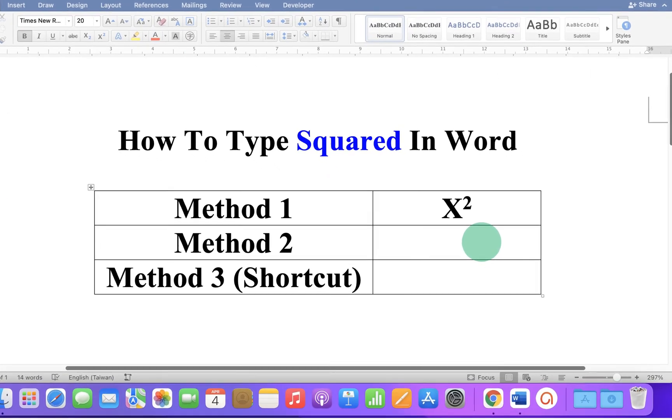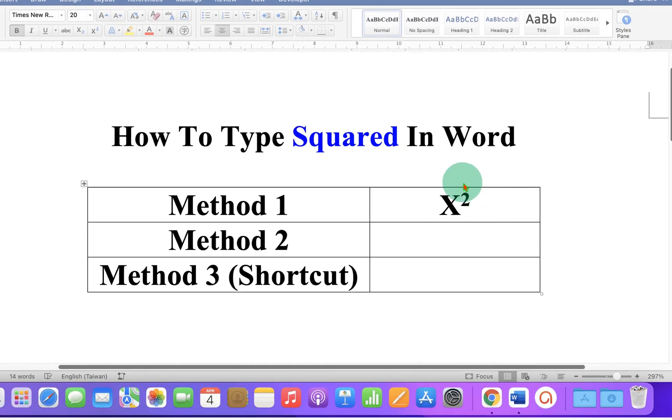In this video you will see how to type squared in a Word document. As you can see, I have written X square symbol in Microsoft Word. There are three easy methods to type the squared symbol. Let's get started.